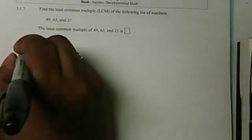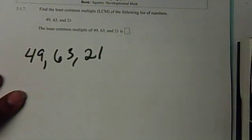The next example is, I have three numbers here that I want to find the least common multiple of. I'm trying to find the least common multiple of 49, 63, and 21. Well, the calculator is not going to let you put 49 comma, 63 comma, 21. The calculator can only do two numbers at a time.